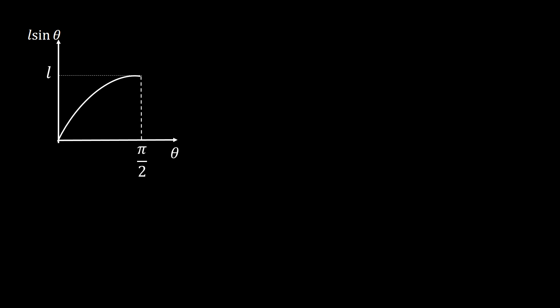So how can we get the required probability? For that we need to plot a graph. The diagram shows a plot of L sin θ — the projection of half the length of the pin in the y direction — plotted against theta. Obviously the pin can land making some angle theta with a horizontal line, and this angle can practically vary from 0 to 90 degrees, which I have written as π/2. Now let us say the pin falls making an angle of 30 degrees with a horizontal line.